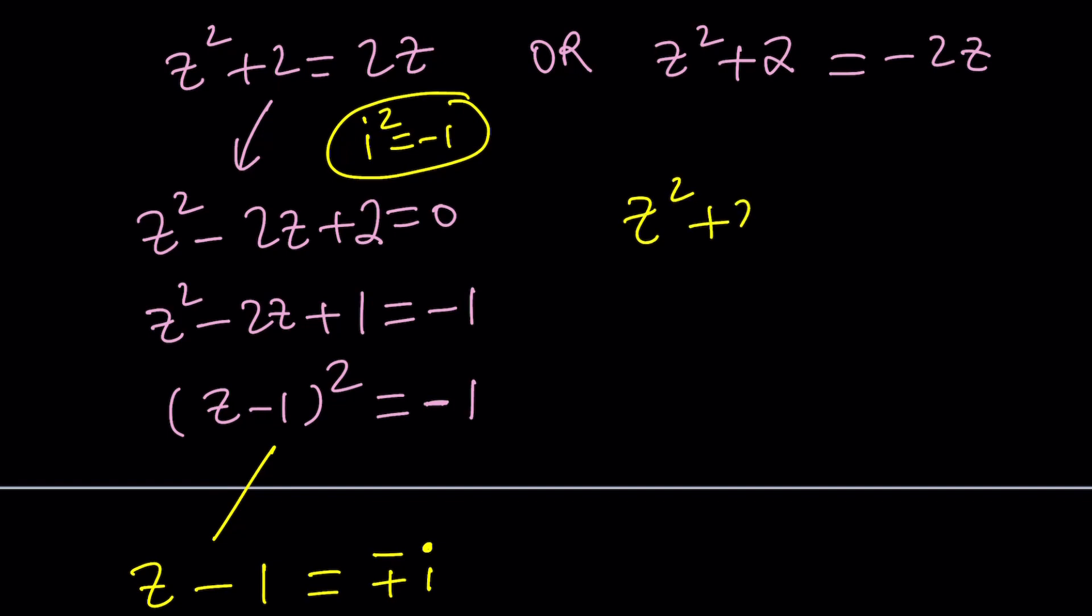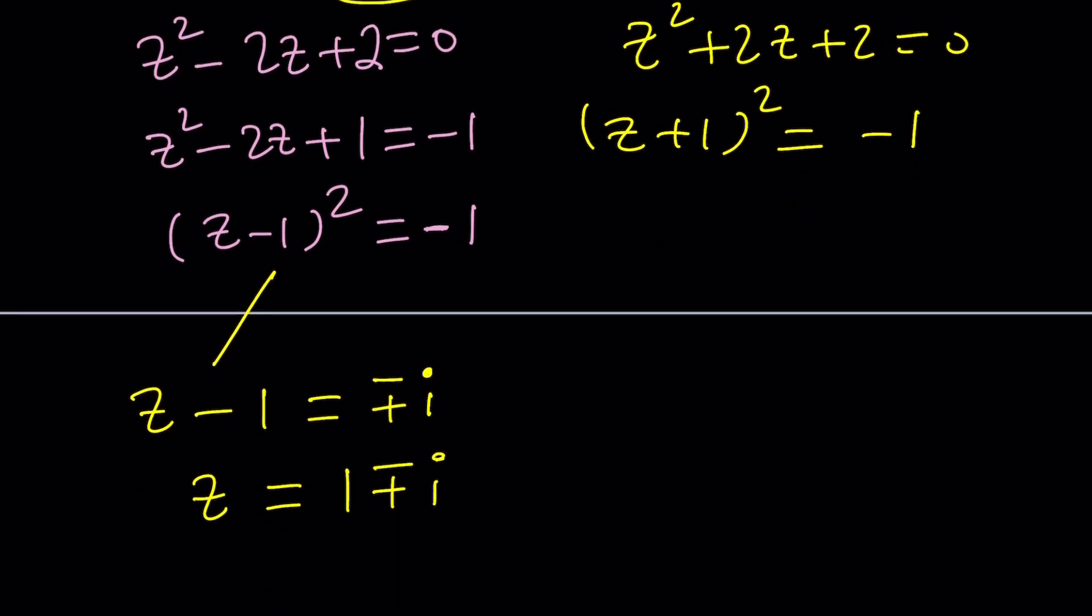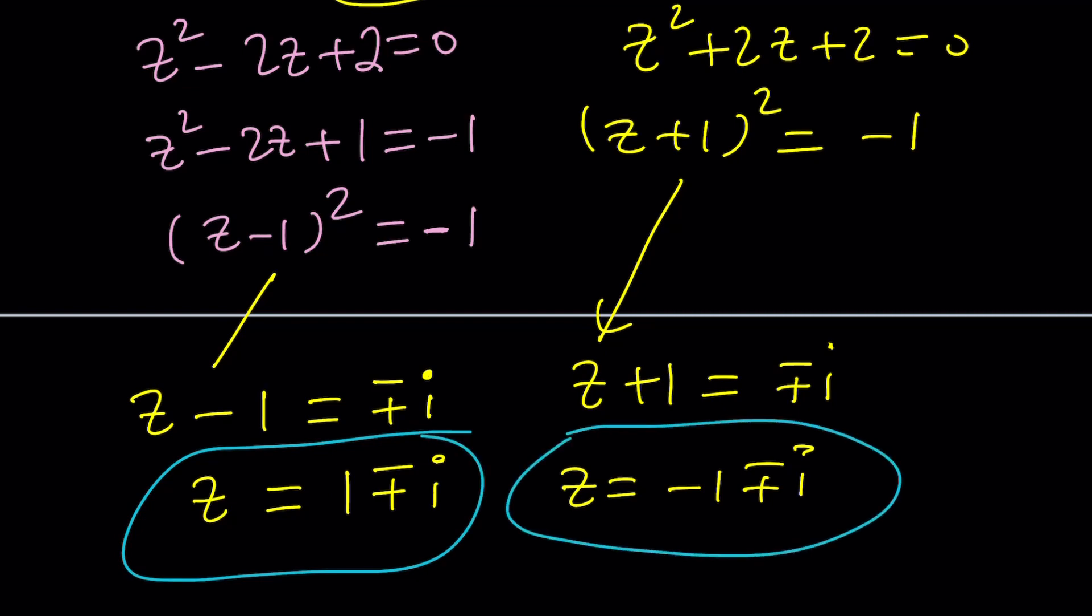Add 2z. And then use the exact same idea. You can write this as z plus 1 squared equals negative 1. This time, it's slightly different. You're going to write this as z plus 1 is equal to plus minus i. And then z is going to become negative 1 plus minus i. So this gives us four solutions. And we were expecting four solutions because this is a quartic equation. Make sense?